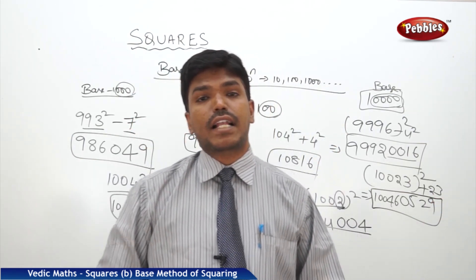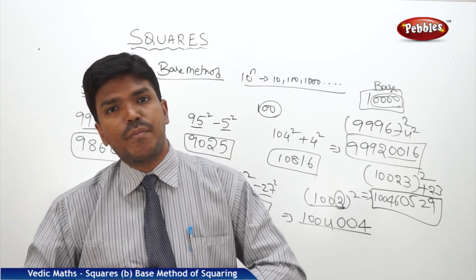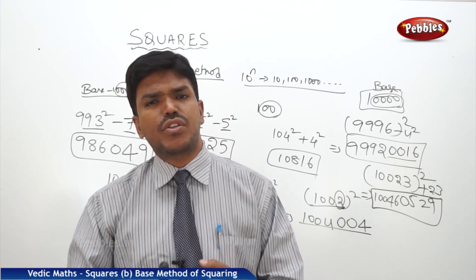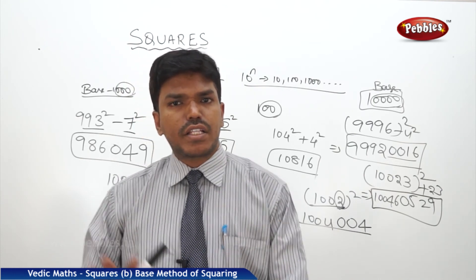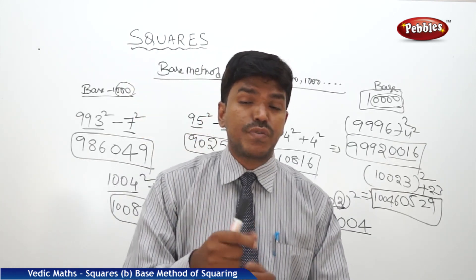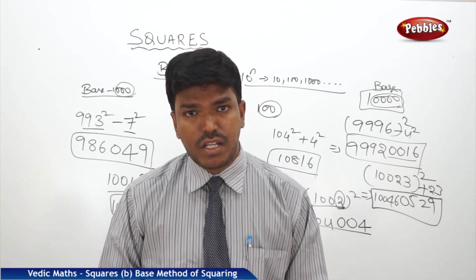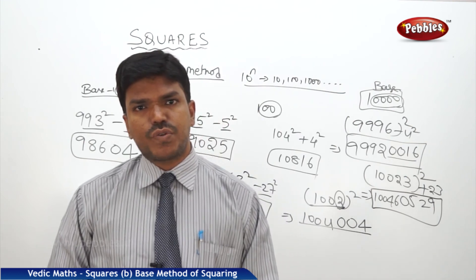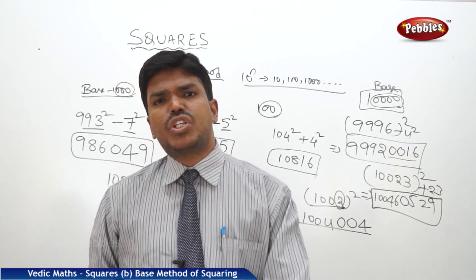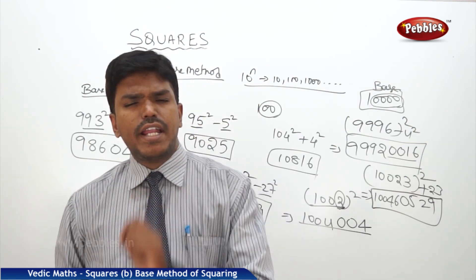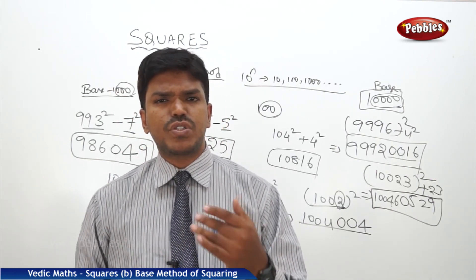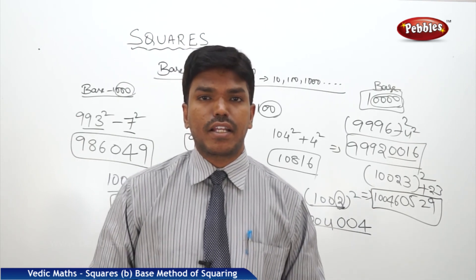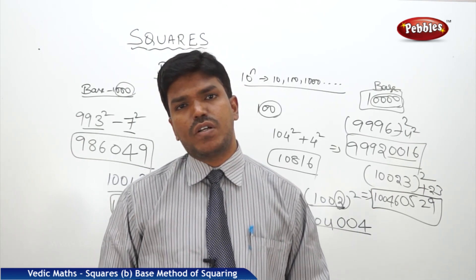Like this we can easily calculate the squares of numbers which are near to the base — whether it is base 10, 100, 1000, or 10,000. Now let us see one more type of technique in squares, in which we can calculate any number's square — whether it is three digit, four digit, or five digit — within a single line. That technique is called the duplex method of squaring.